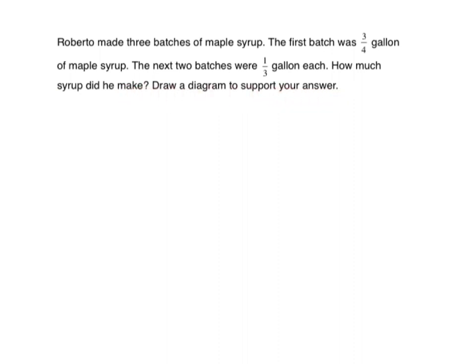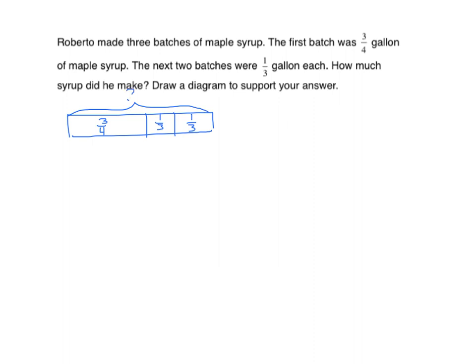This is pretty simple because we start with three-quarters of a gallon and then we're going to put together two more batches — two batches of one-third of a gallon each. Let's create a tape diagram. We're going to partition this tape diagram into three parts. Three-fourths represents his first batch, one-third represents his second, and one-third represents his third. Now we have to create a bracket and a question mark, and that's our whole.